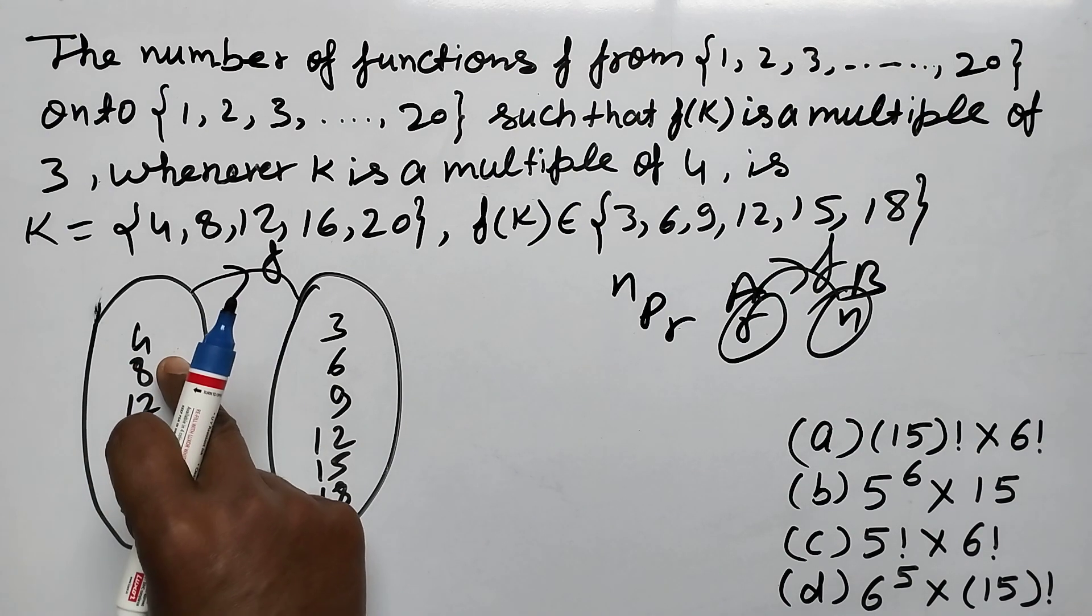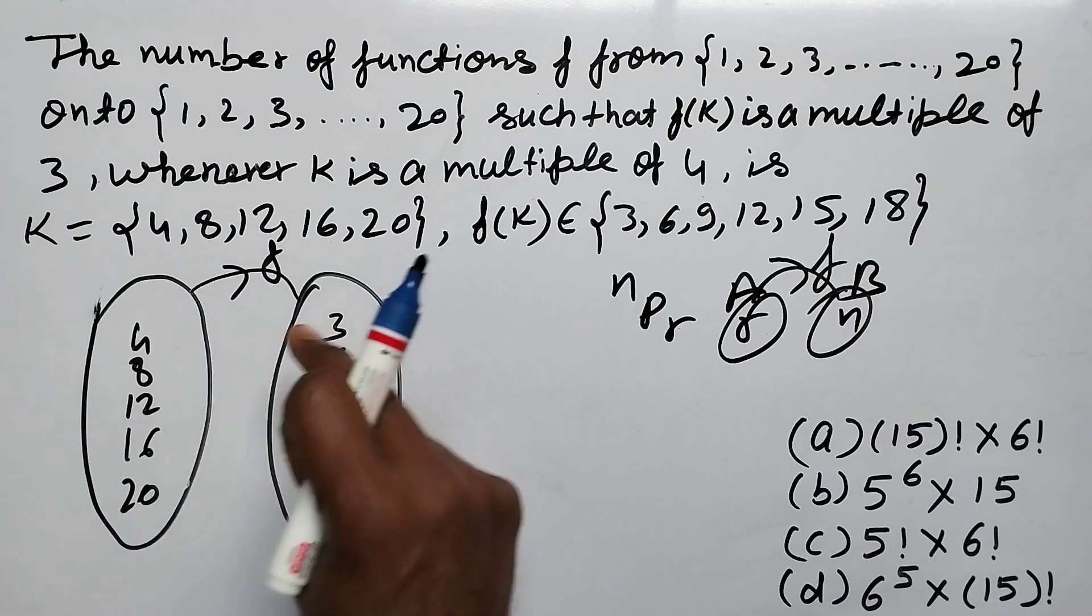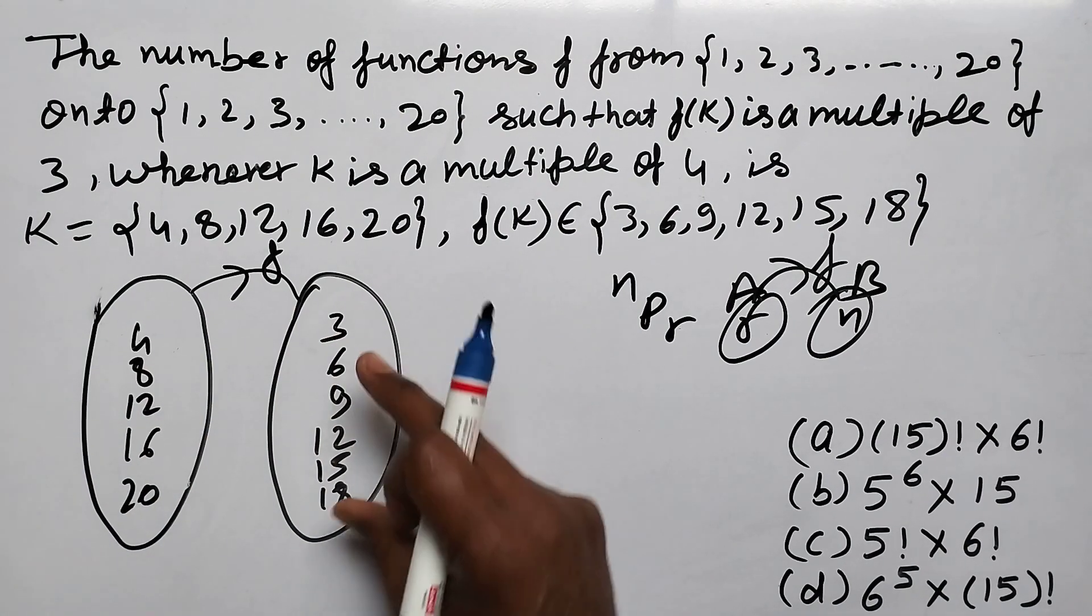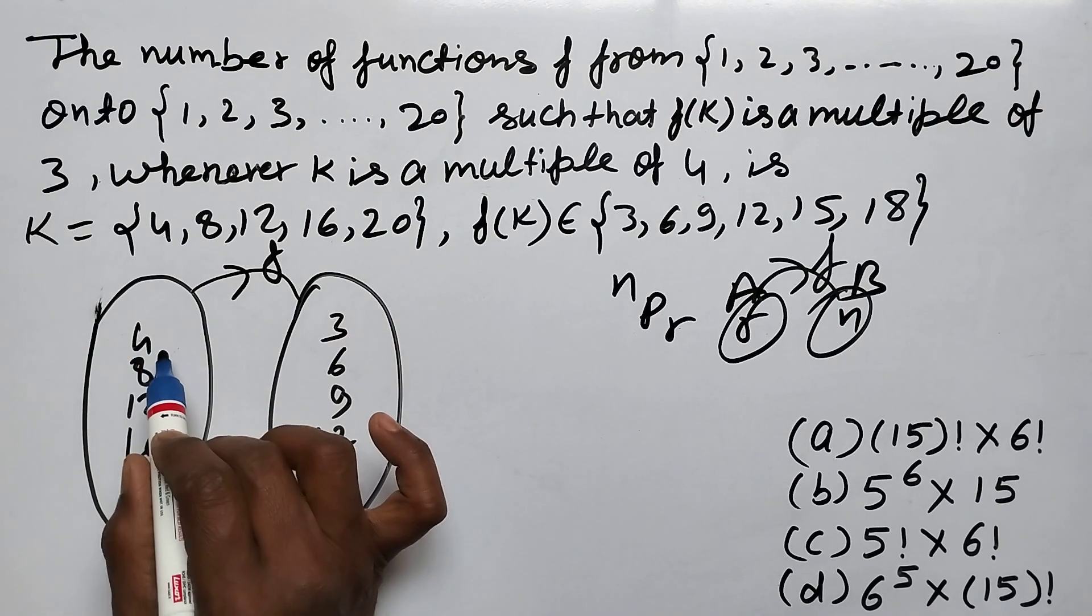These 5 elements: 4, 8, 12, 16, 20 - their images will be from 3, 6, 9, 12, 15, 18 only. Now let's take 4. 4's image can be any one of these 6, in 6 ways.